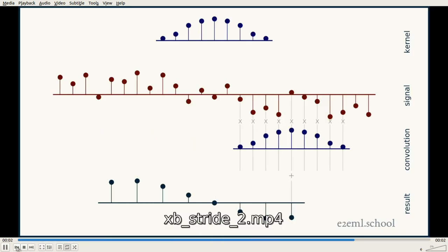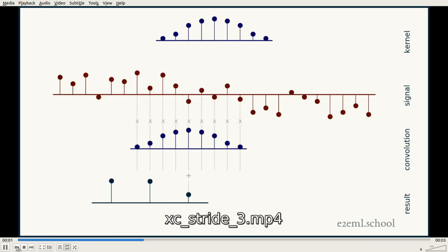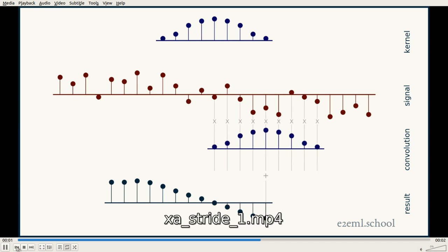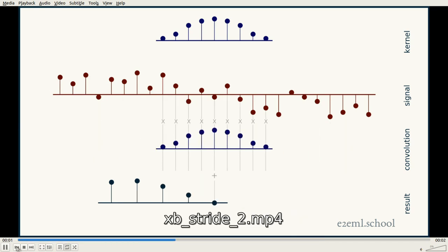The stride that you choose is based on what you know about your data, how densely you expect information that you care about to be represented, and also how you plan to use the result.